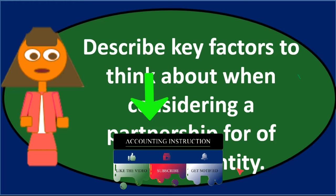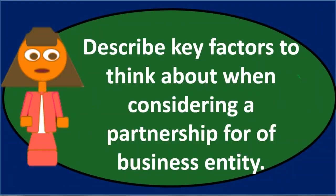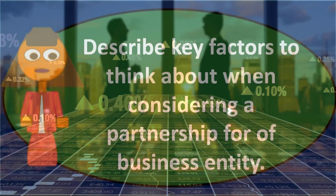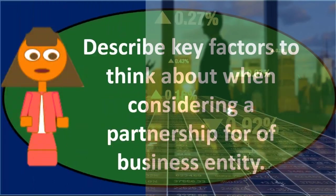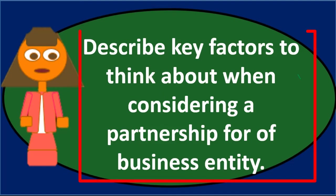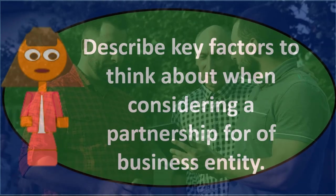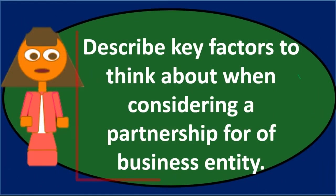Another key issue: partners should really think about having a formal agreement. It's not legally required — you could have an oral agreement, or if there's no agreement the default is typically an even split of profits. Many people entering partnerships, especially with family or friends, run into problems because they assume they don't need to define the terms specifically. But even close friends and family often don't have exactly the same idea of what they want, how much time they're willing to expend, or how important the partnership is to each person.